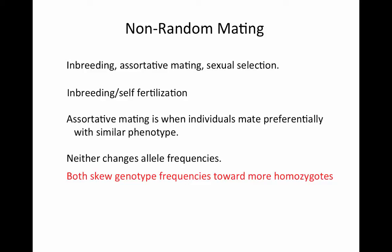Neither of these kinds of non-random mating, inbreeding and assortative mating, actually changes the allele frequencies. But both of them are going to skew the genotype frequencies toward more homozygotes and lower heterozygosity.